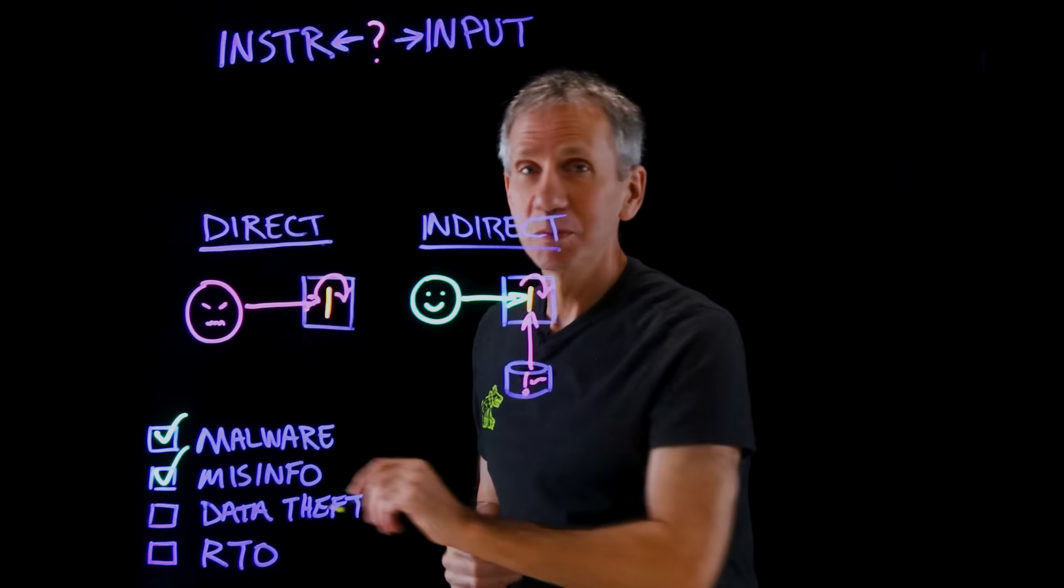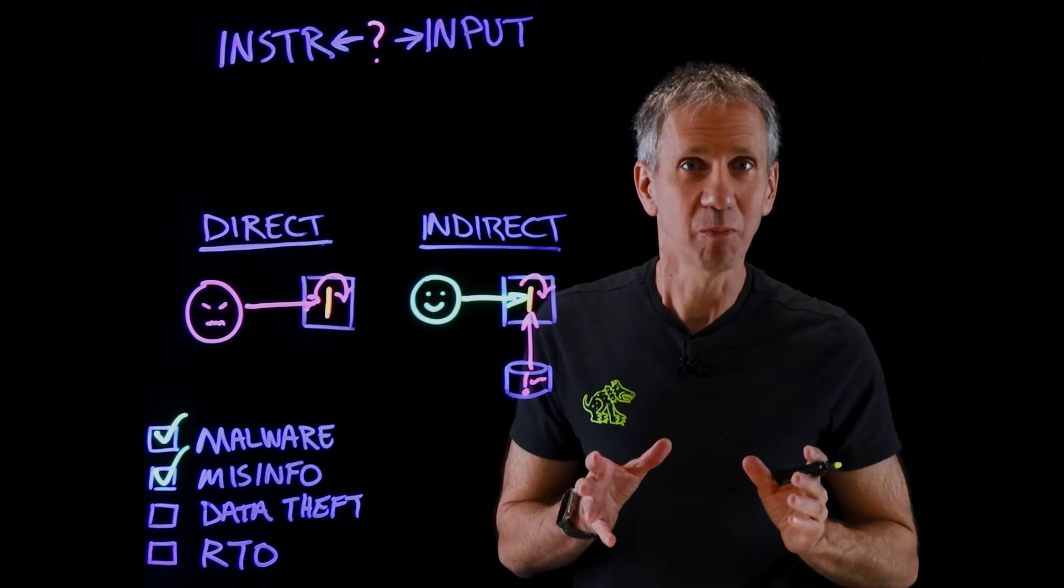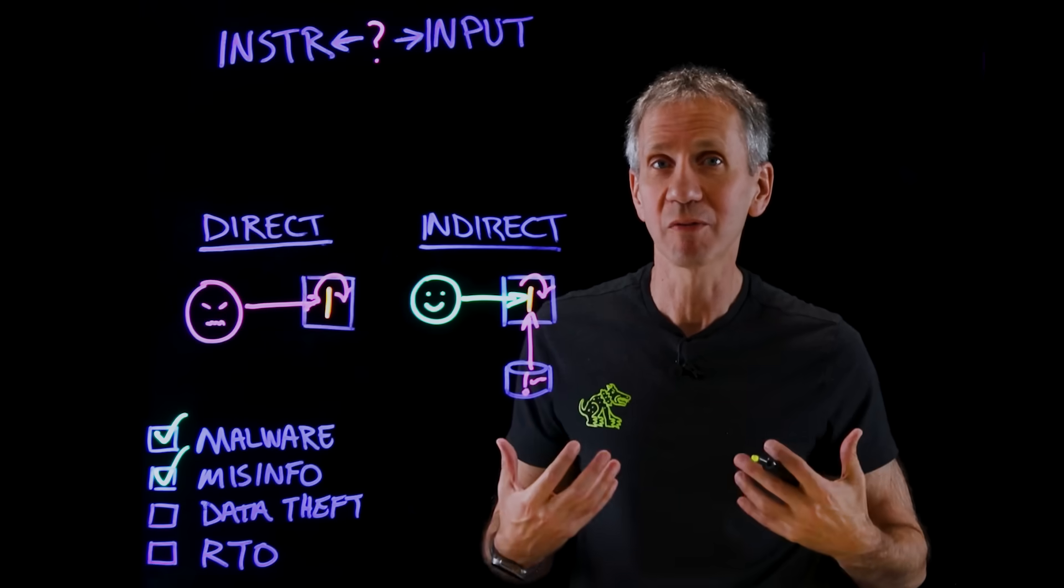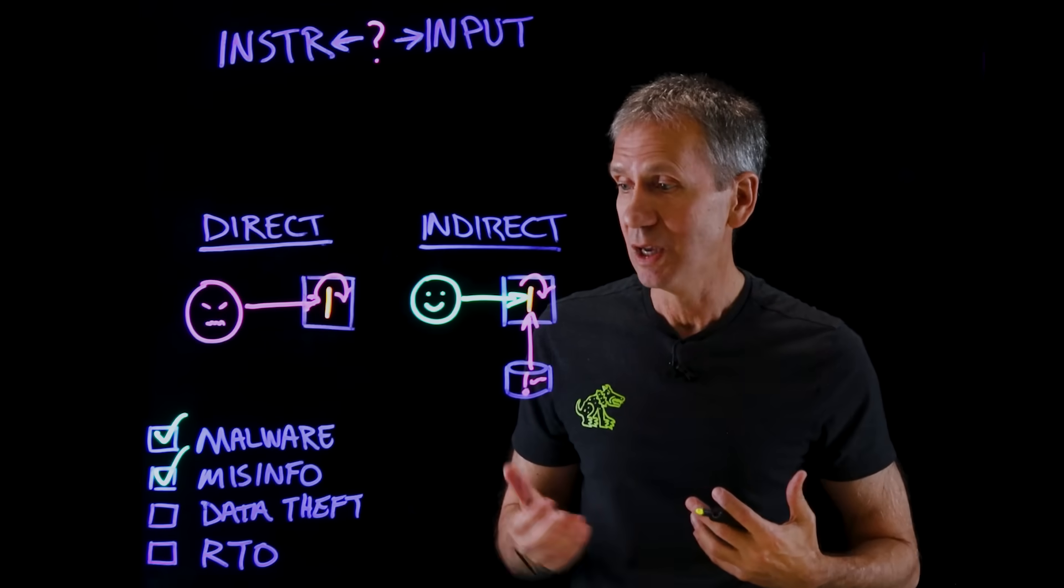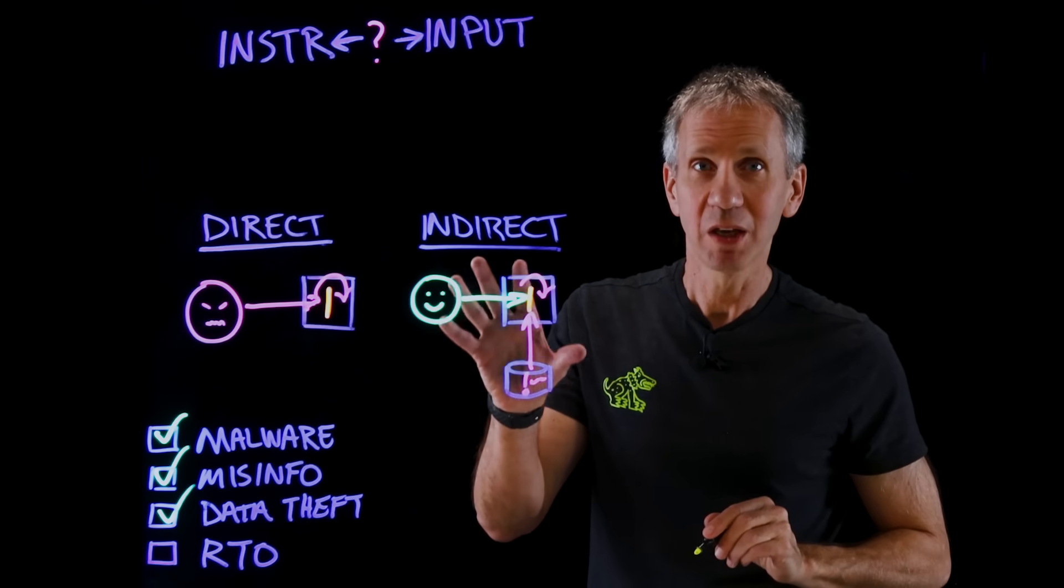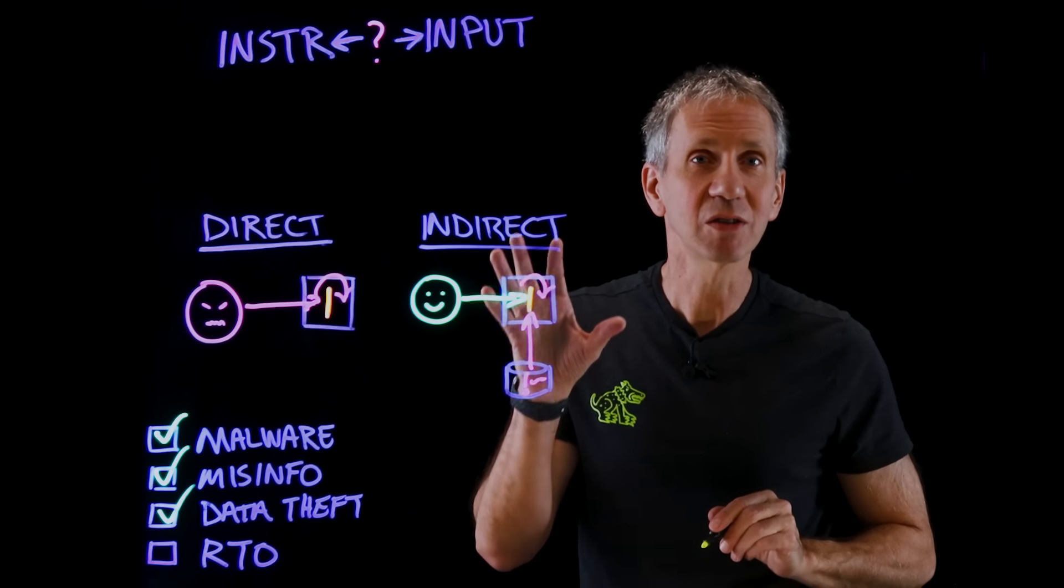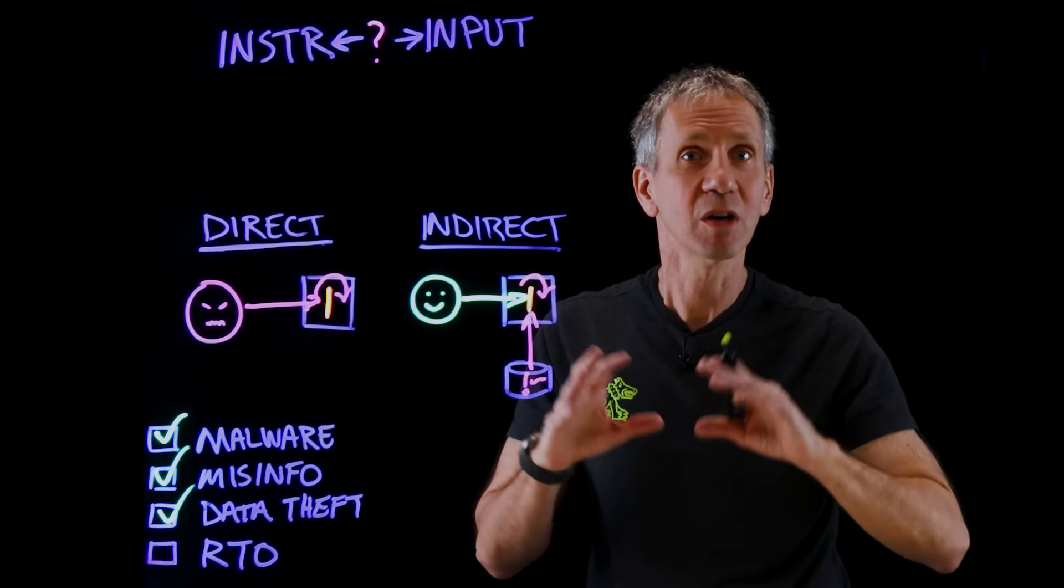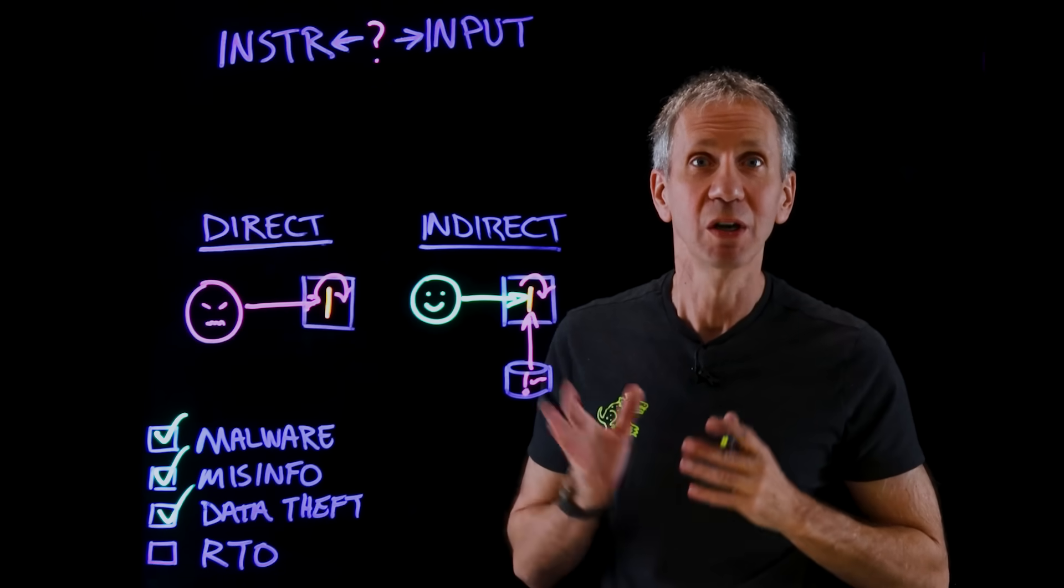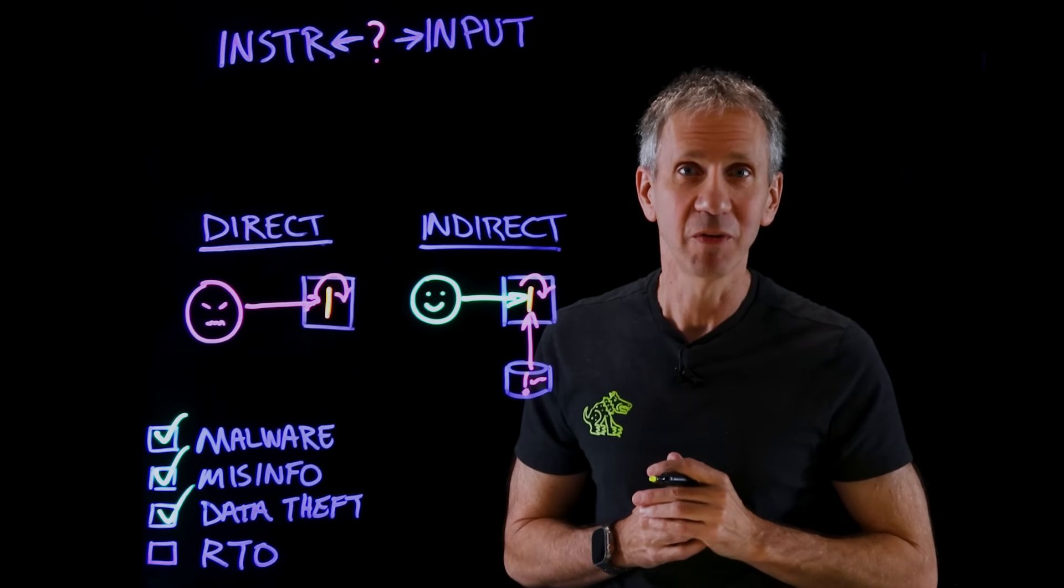It could be that the system gives misinformation. Now, that's really important because we need the system to be reliable, and if it's going to give us wrong information, we're going to make bad decisions. It could be that data ends up leaking out. What if some of the information that I have in here is sensitive customer information or company intellectual property, and somebody figures out a way to pull some of that out through a prompt injection? That would be very costly.